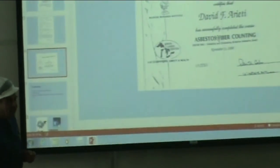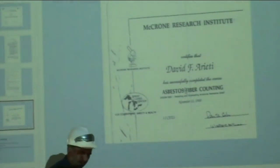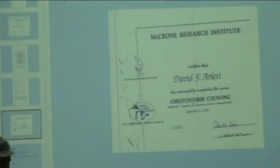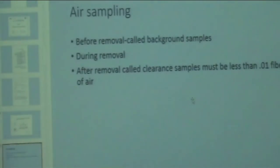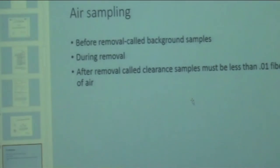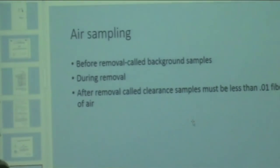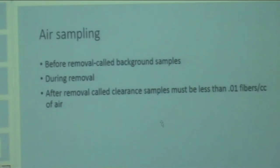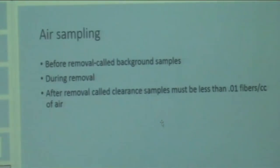This is the NIOSH 582 counting course. To be an air sampling professional you need this fiber counting class, which lasts a week. I took mine at the McCrone Institute in 1988. Before, during, and after removal, we have to do air samples. Before removal, we do background samples. During removal, we take area and personal samples. After removal, we do clearance samples, and we have to get less than 0.01 fibers per cc of air.